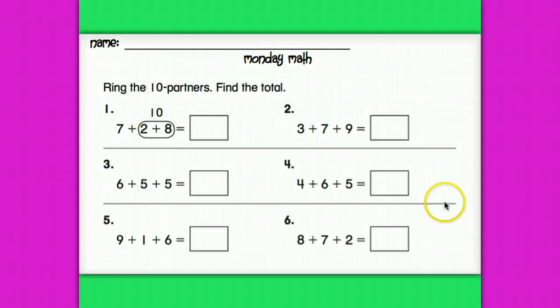Okay, so here's a peek at your homework sheet. You should have this in front of you now. If you don't, you can pause and grab it really quick. The directions read, ring the 10 partners, then find the total. Okay, so each problem is two steps. So I'm going to be looking for you to be doing what I see in this first problem here.